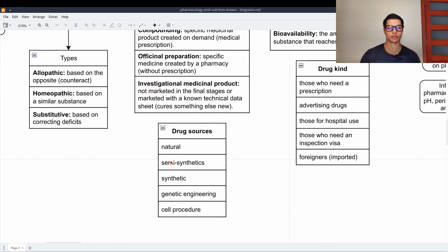Drug sources can be natural, chemical, semi-synthetics, synthetic, genetic engineering and cell procedures. These are biotechnologies.